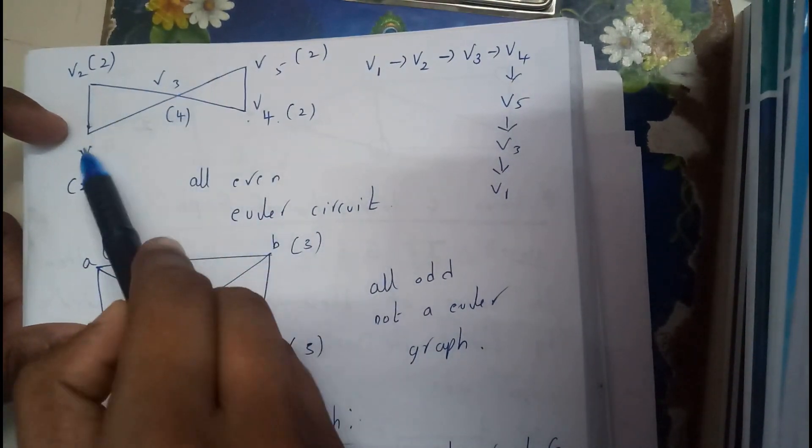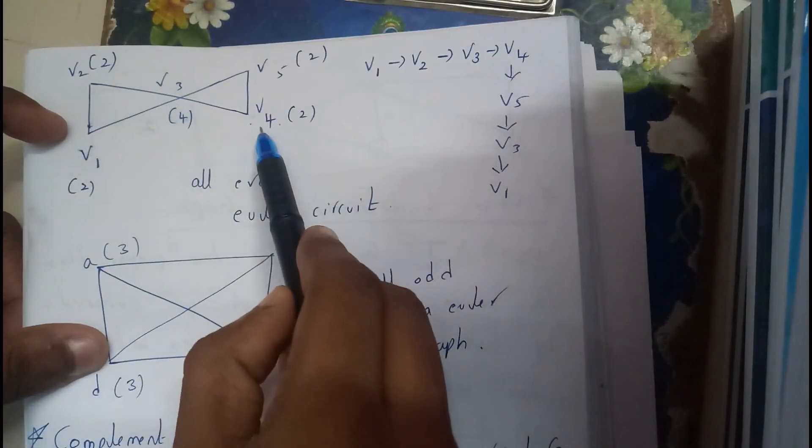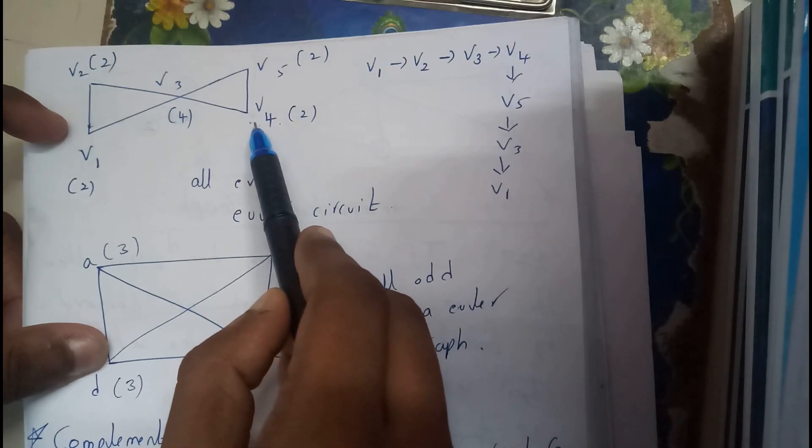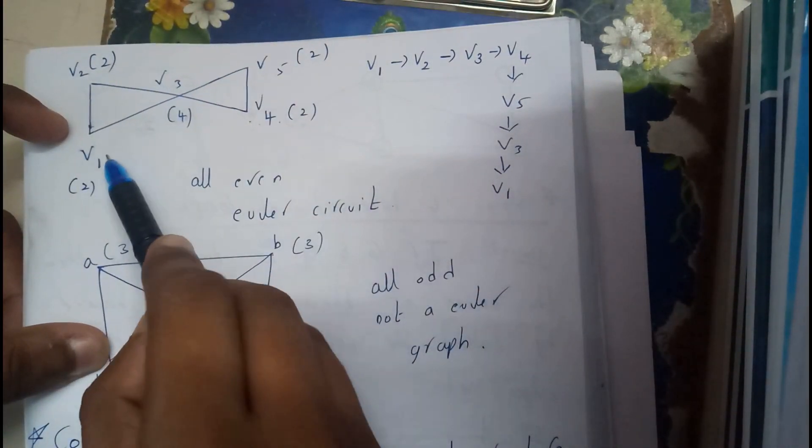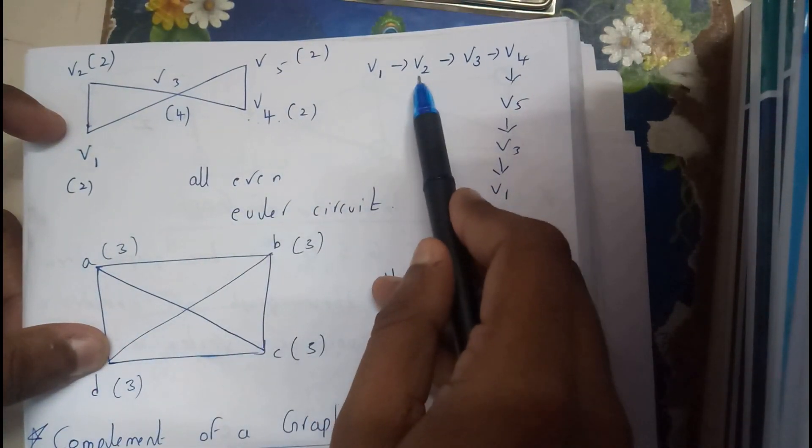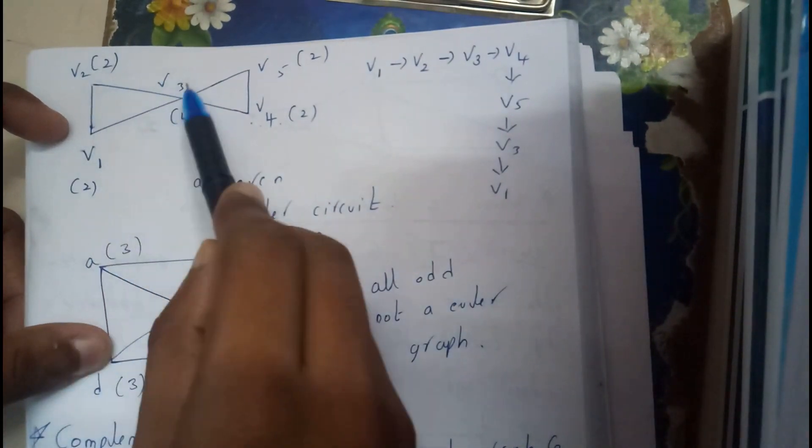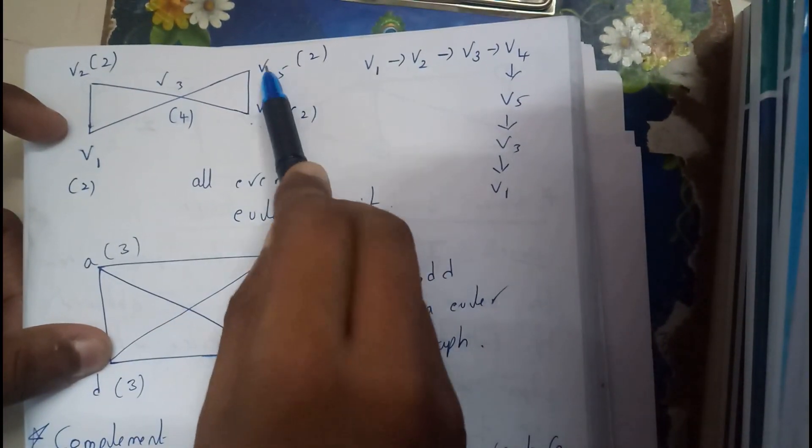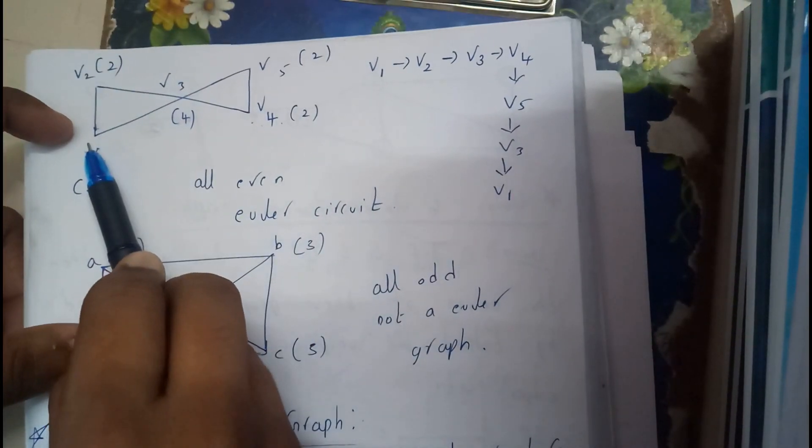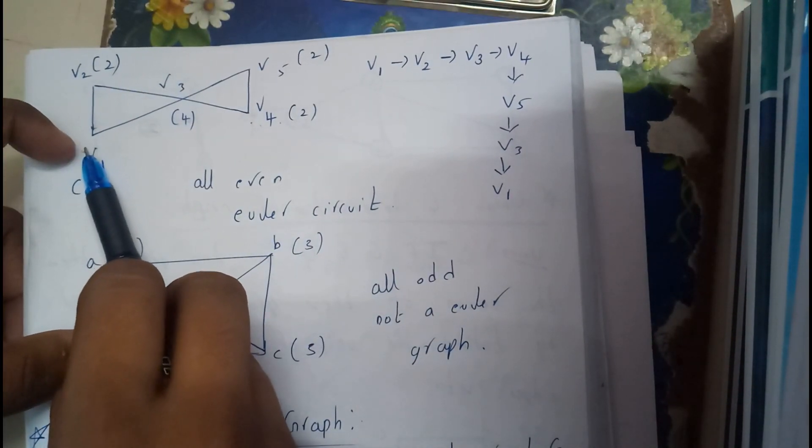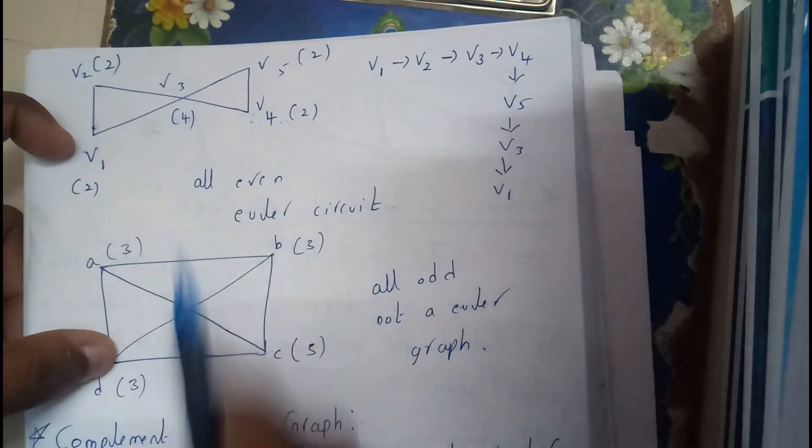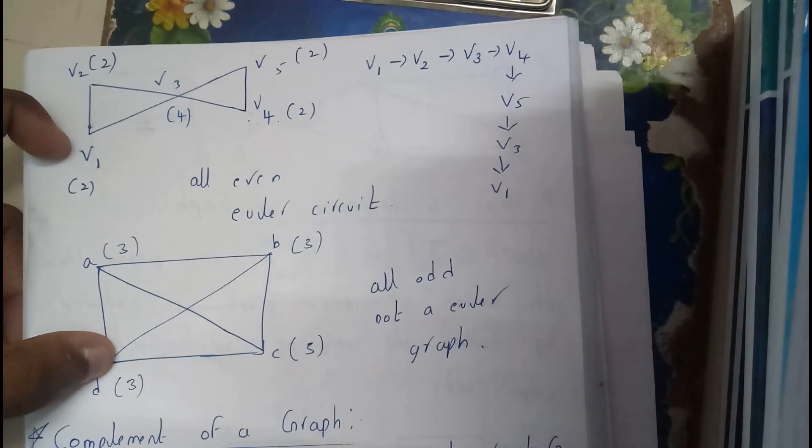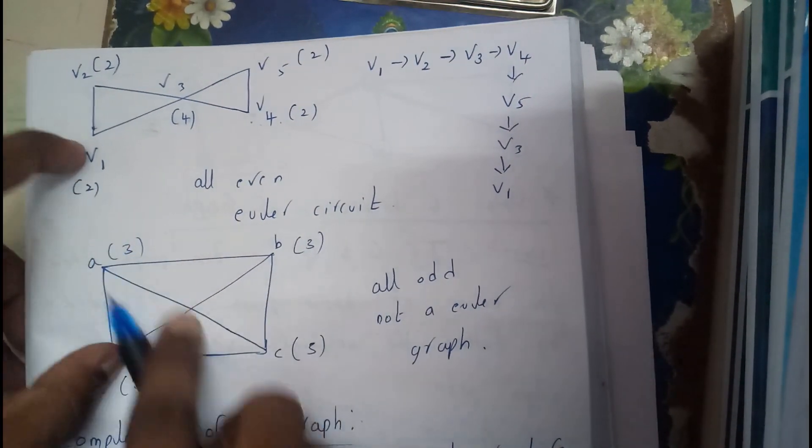So now v1, v2, v3, v4, v5. If I try to travel from one place to another, let us start at v1. v1 to v2, v2 to v3, v3 to v4, v4 to v5, v5 to v3, v3 to v1. I reach with the exact same point again. I started at v1, so now it is an Euler circuit.